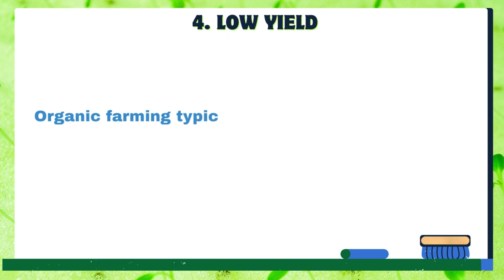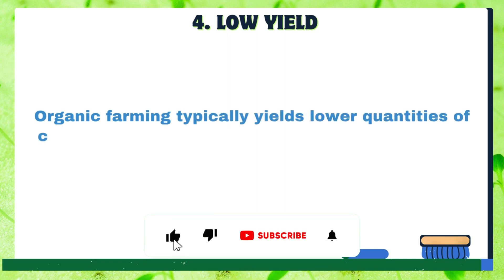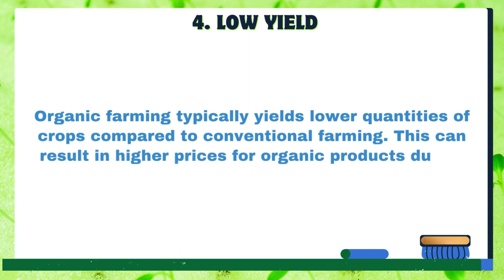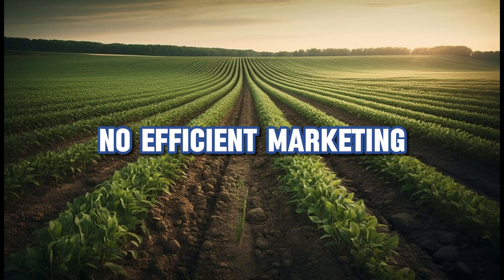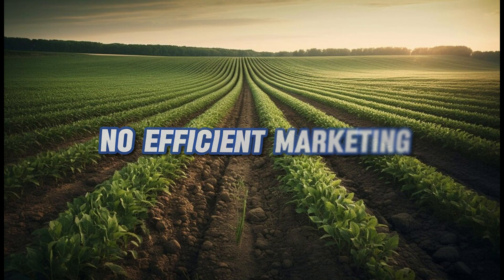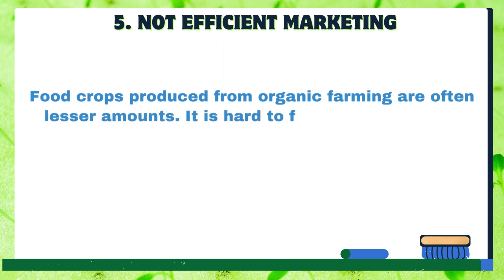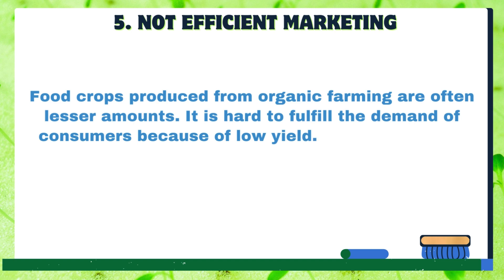Low yield: Organic farming typically yields lower quantities of crops compared to conventional farming. This can result in higher prices for organic products due to lower supply. Food crops produced from organic farming are often in lesser amounts, making it hard to fulfill the demand of consumers.